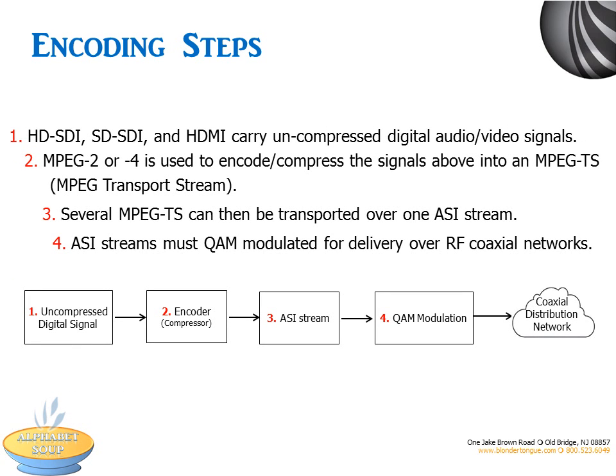This diagram shows you the steps to encode video and where the interfaces we've talked about fit in. The SDI or HDMI sources carry uncompressed signals. They are then encoded into MPEG-2 or 4 transport streams. Several transport streams can be packaged into one ASI stream. And finally, the ASI streams are QAM modulated for delivery over coax.